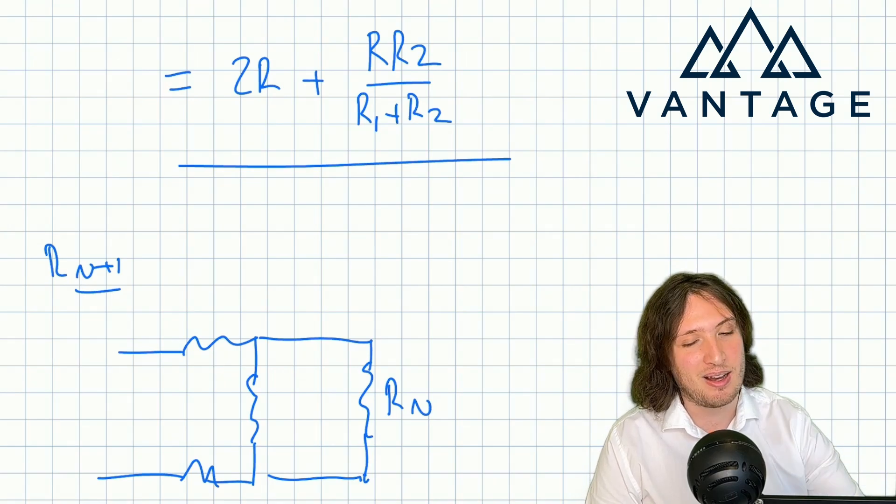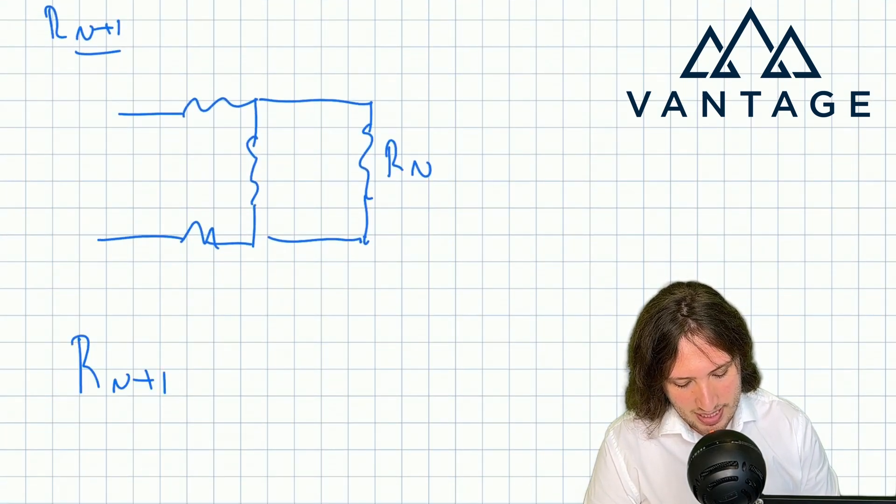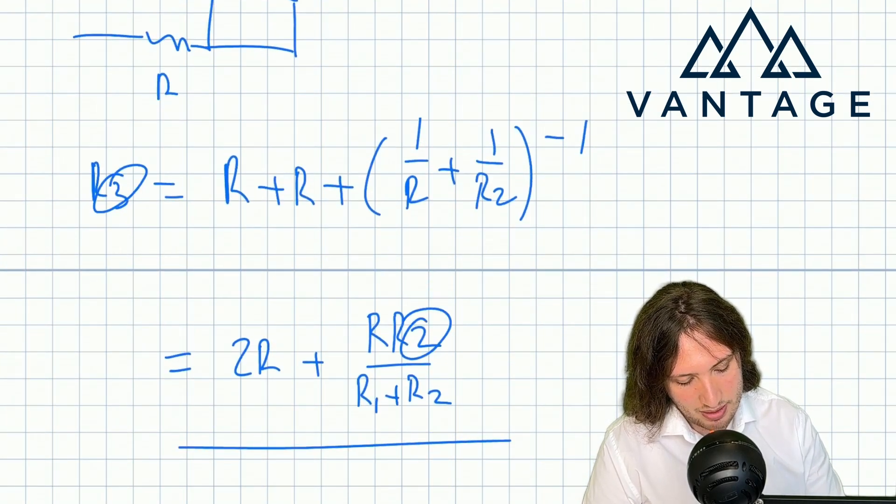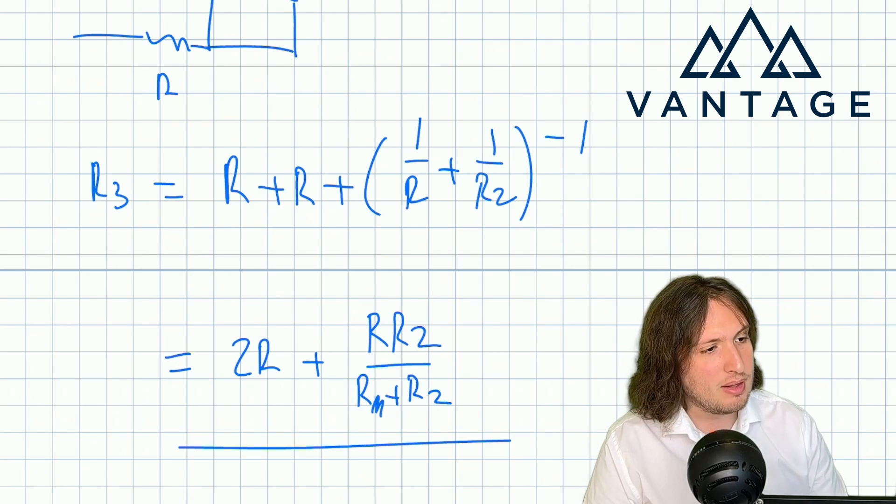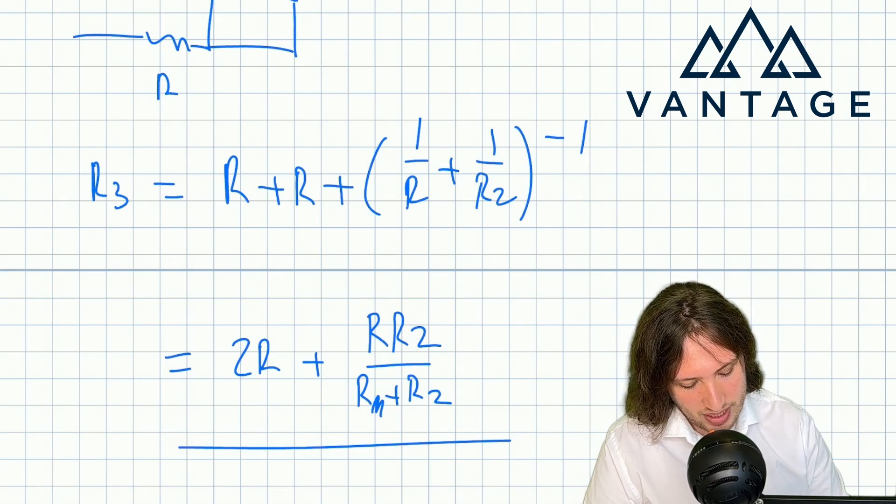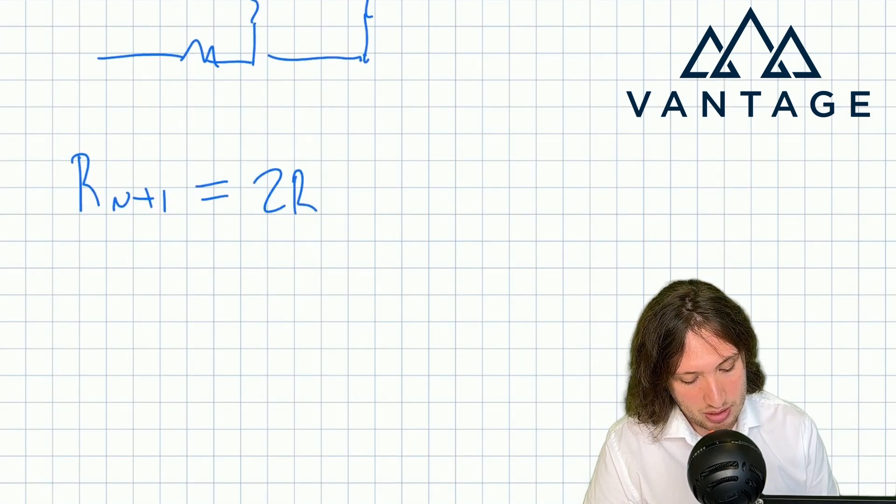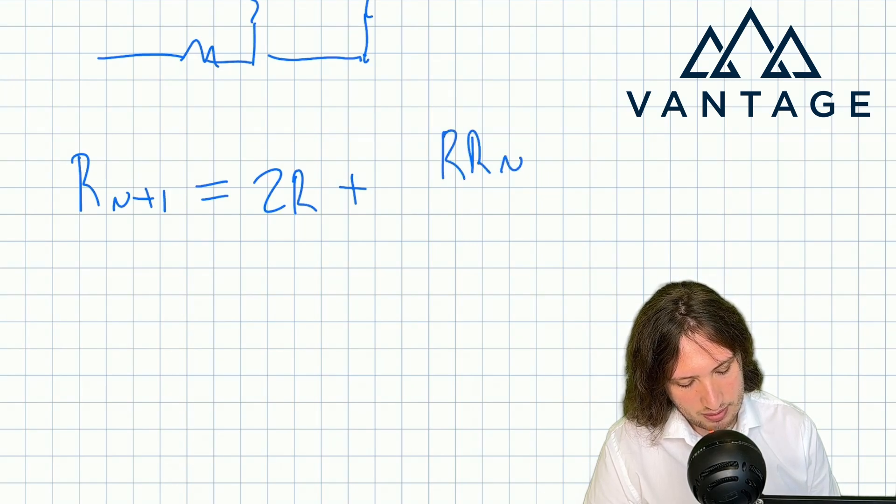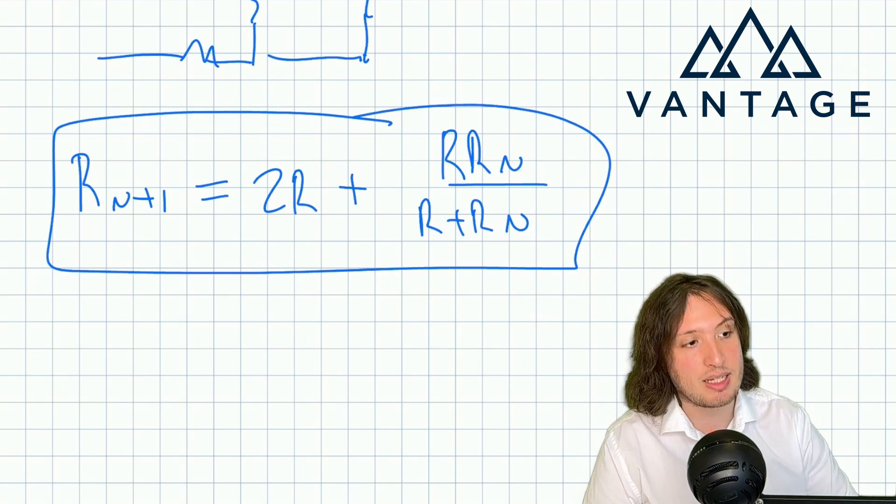Now this is still far from telling us the answer to the infinite case, but we are going to be able to write down a recursion. Because I can now see, really just using this but it's n+1 and n rather than, and of course R1 is just R. It's just like this but rather than n+1 it's 3 and rather than n it's 2. We can see that Rn+1 is going to be 2R plus R times Rn over R plus Rn. So it's the same as the result we derived a minute ago for 2 and 3.